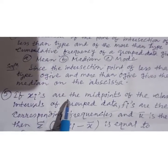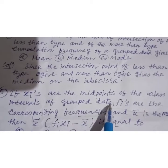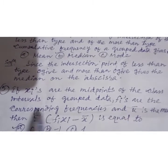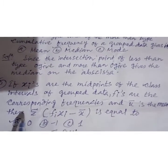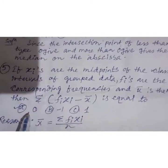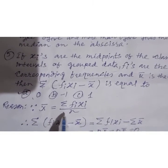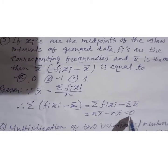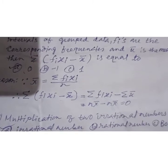If x values are the midpoints of class intervals of grouped data, f values are the corresponding frequencies, and x-bar is the mean, then the summation of f times (x minus x-bar) is equal to zero. This follows directly from the mean formula — after subtracting, we will get zero.